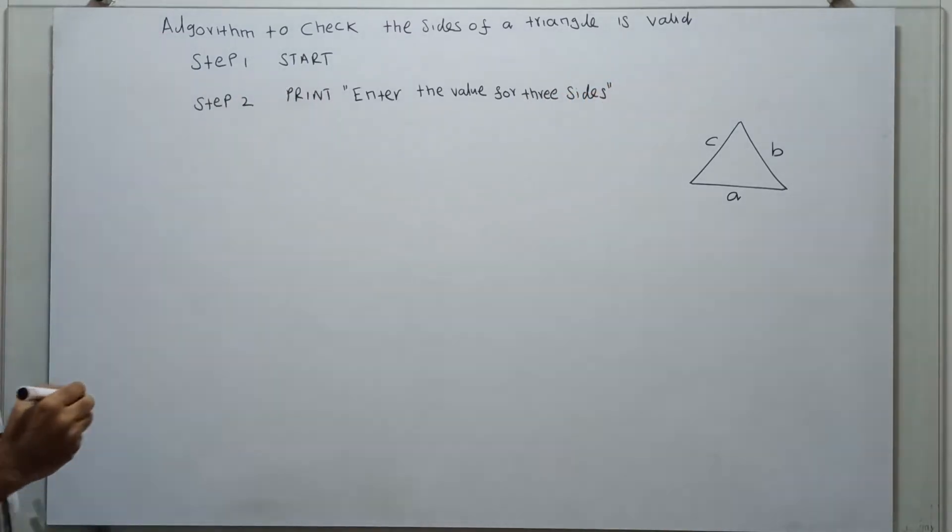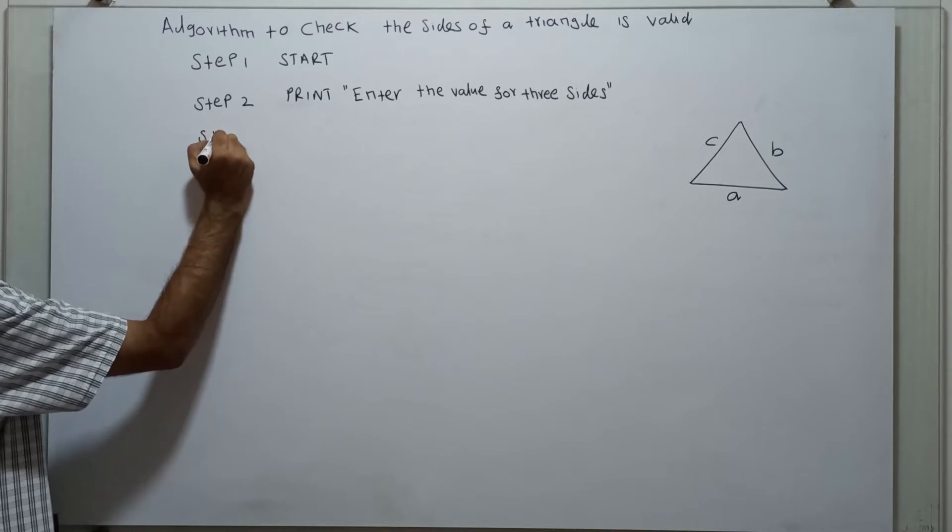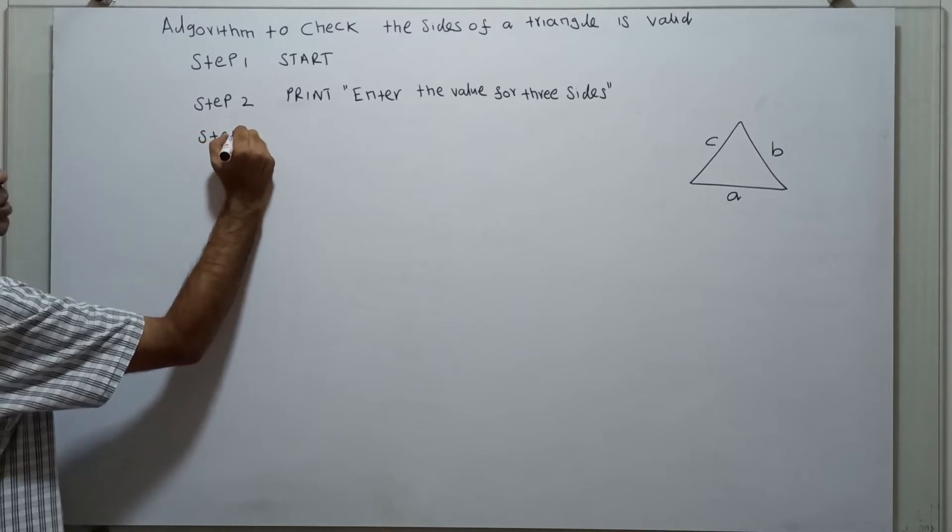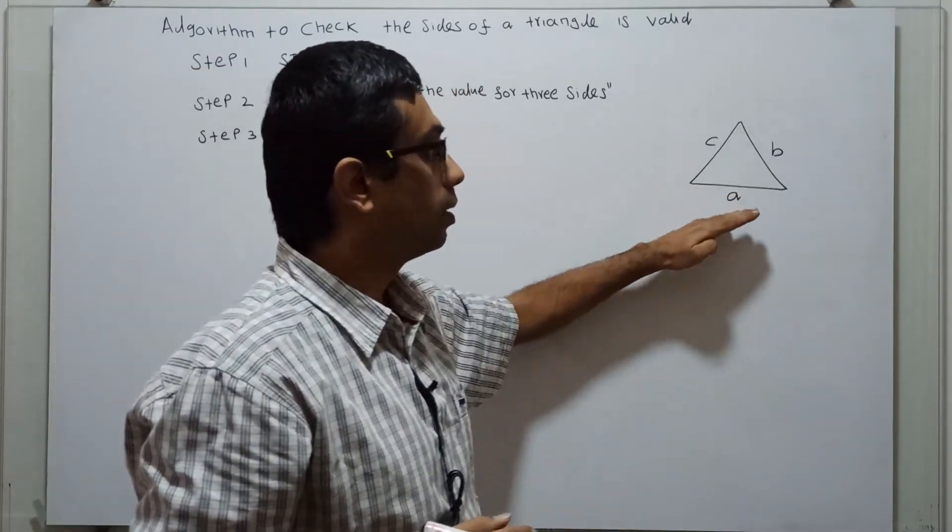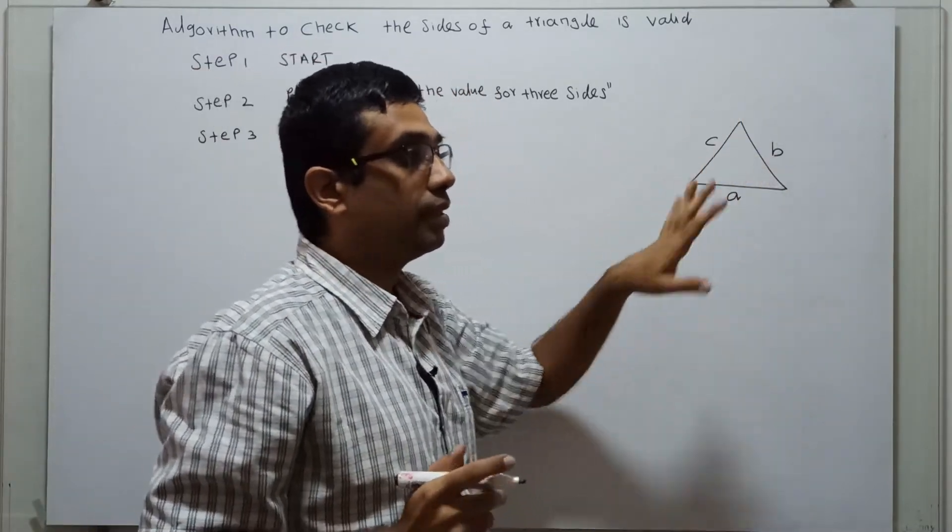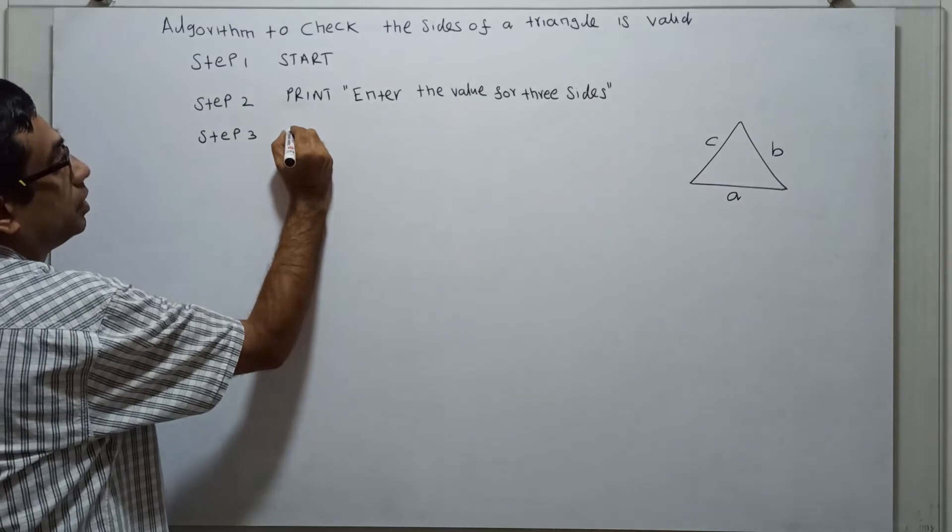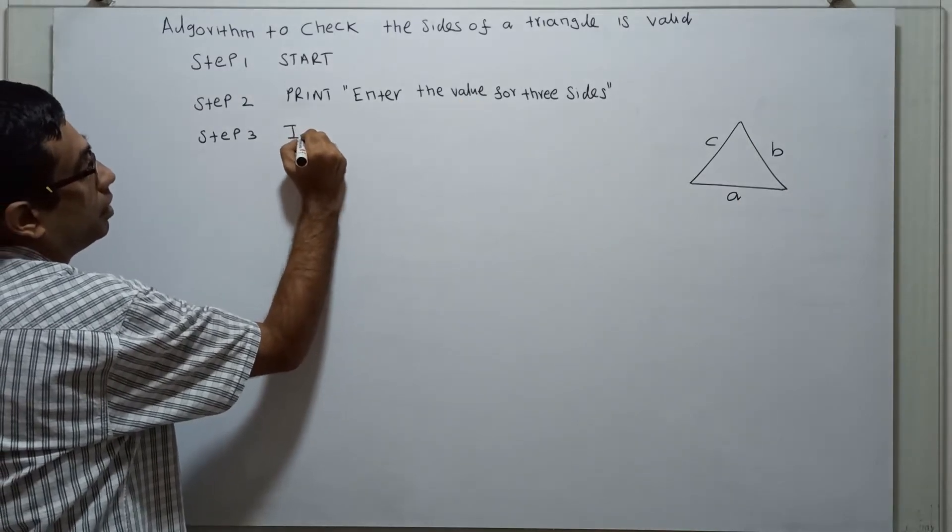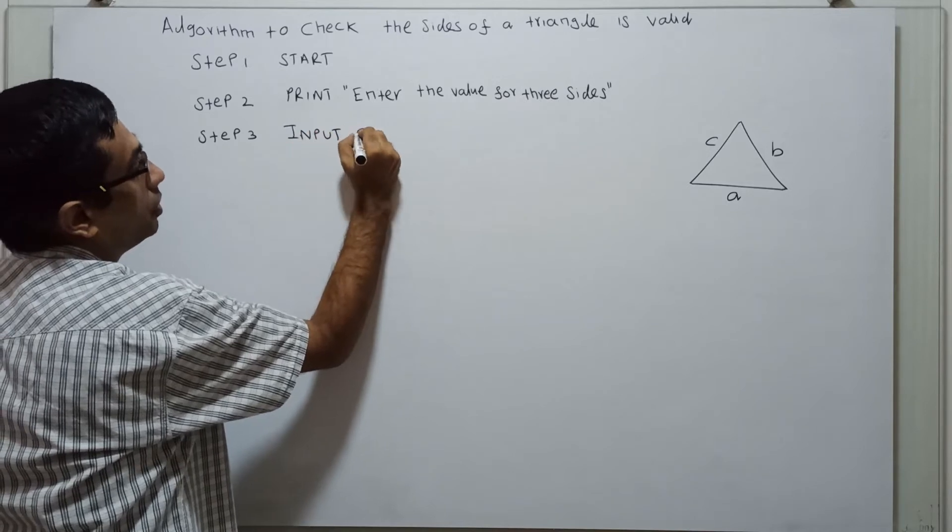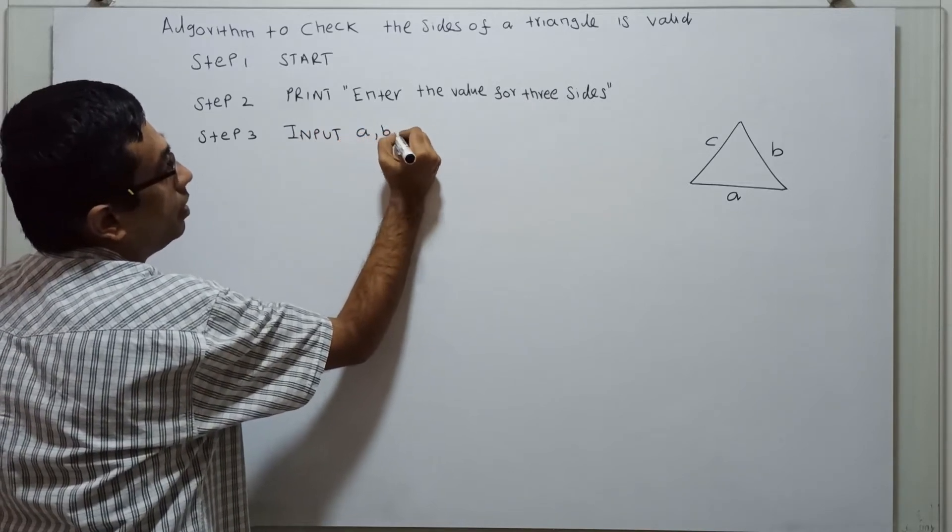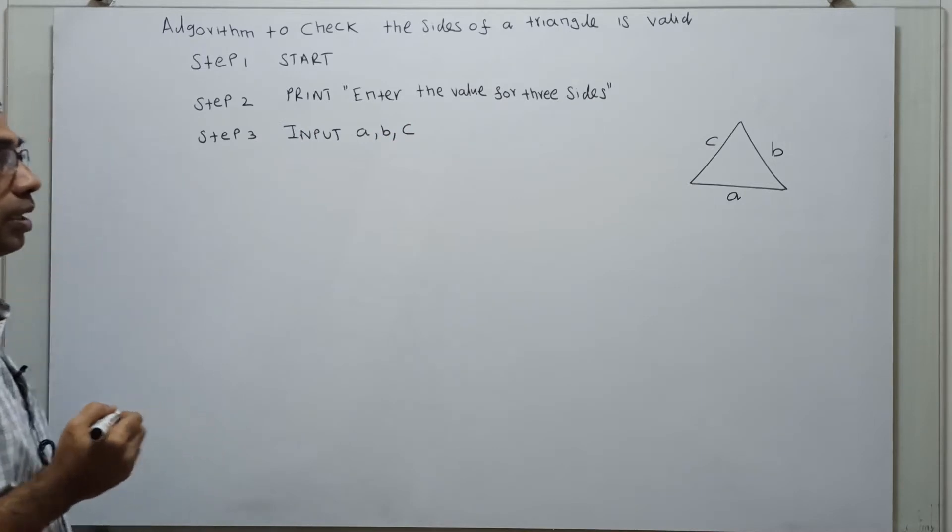Next, we have to obtain input for the three sides A, B, C. The variables stand for the three sides. Input A, B, and C. That is it.